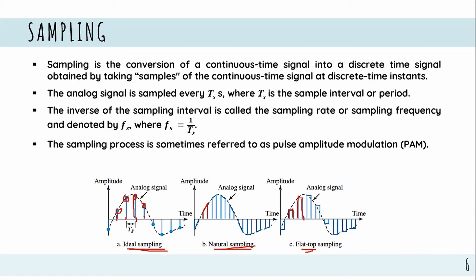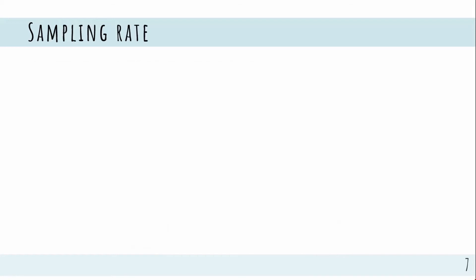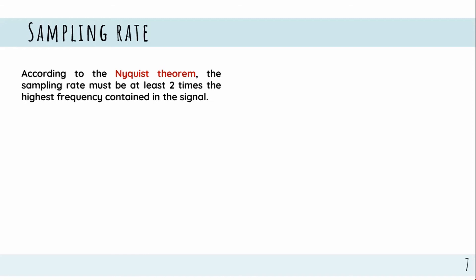The sampling rate must be at least two times the highest frequency content in the signal. This is the Nyquist theorem: to accurately reconstruct a signal, the sampling rate must be at least double the maximum frequency present in the composite signal.